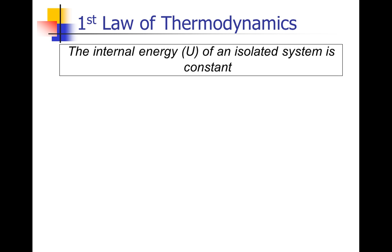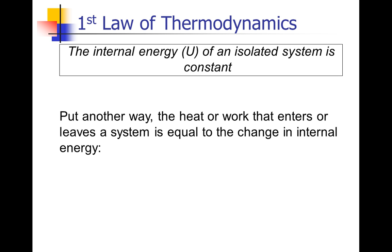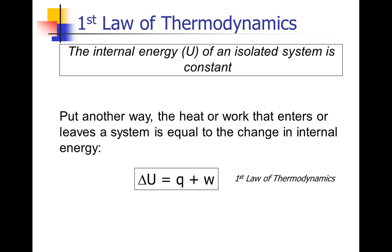Put another way, because energy transfers by either heat or work, we can say that the heat or work that enters or leaves a system is equal to the change in internal energy. We'd never know the total internal energy of a system, but we would know the change. So we can say that the change in internal energy, given the symbol delta U, is equal to the amount of heat that enters or leaves a system plus the amount of work that enters or leaves a system. This is the mathematical expression of the first law of thermodynamics.